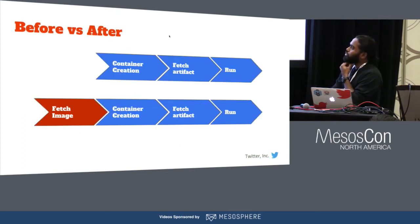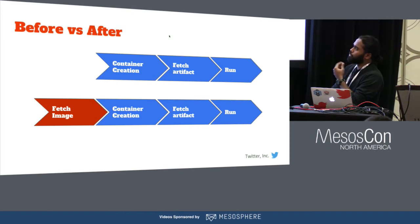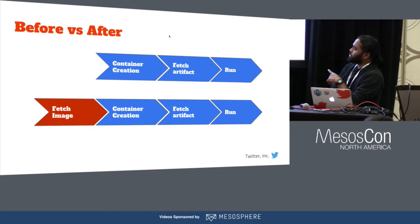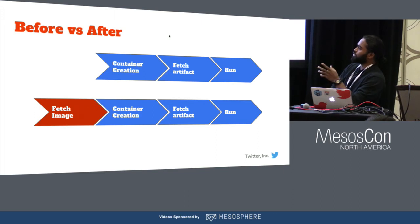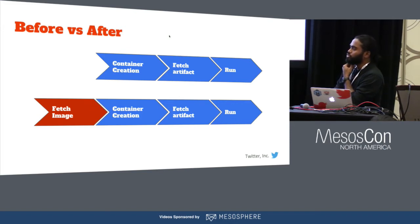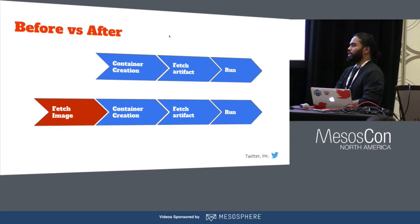So how does using file system isolation change our day-to-day workflow? Before, without any file system isolation, we did not have any container images that we had to fetch. Now that we are introducing it, we had this extra step before actually creating a container, which is to fetch the image. We had to fetch the image before we could create the container, since the image actually contains the file system that would be unpacked, created, and mounted into the container.